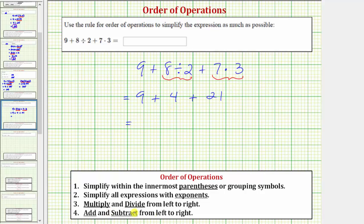Our last step is to add and subtract from left to right but notice how we only have addition. So from left to right nine plus four is equal to thirteen. So we have thirteen plus twenty-one and thirteen plus twenty-one equals thirty-four.